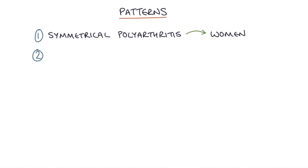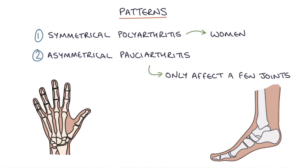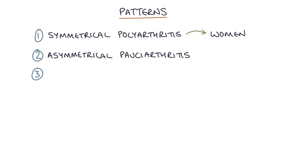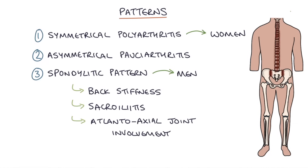Another classic pattern is an asymmetrical oligoarthritis — remember oligoarthritis is where only a few joints are affected — and this typically affects the digits, so the fingers and toes, and also the joints of the feet. A further typical pattern is a spondylitic pattern, which is more common in men and presents with back stiffness, sacroiliitis, and atlanto-axial joint involvement at the top of the neck.